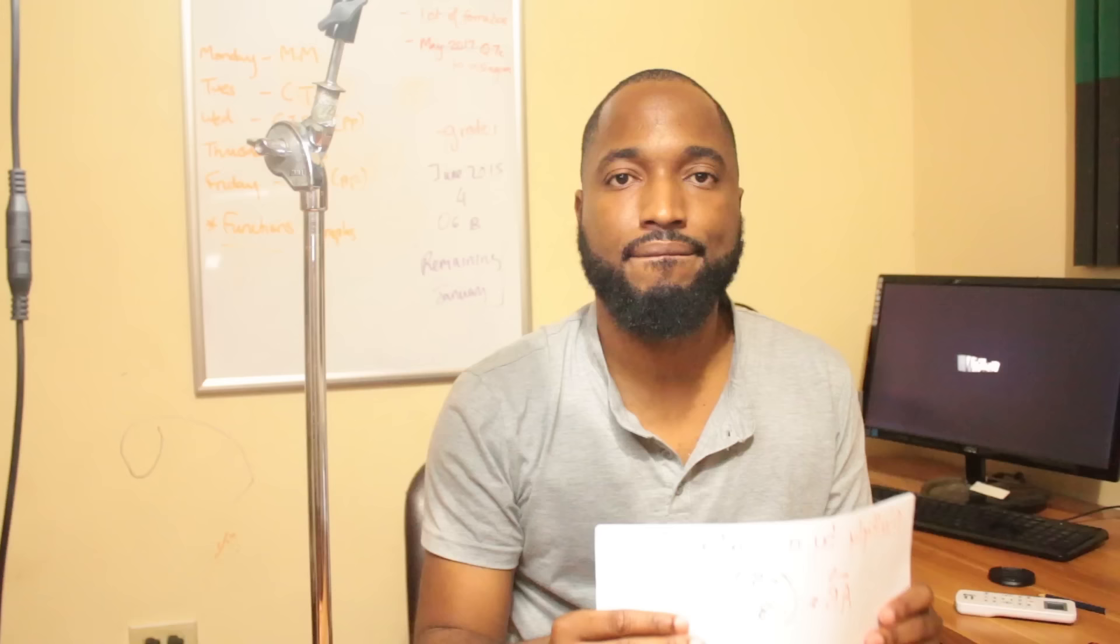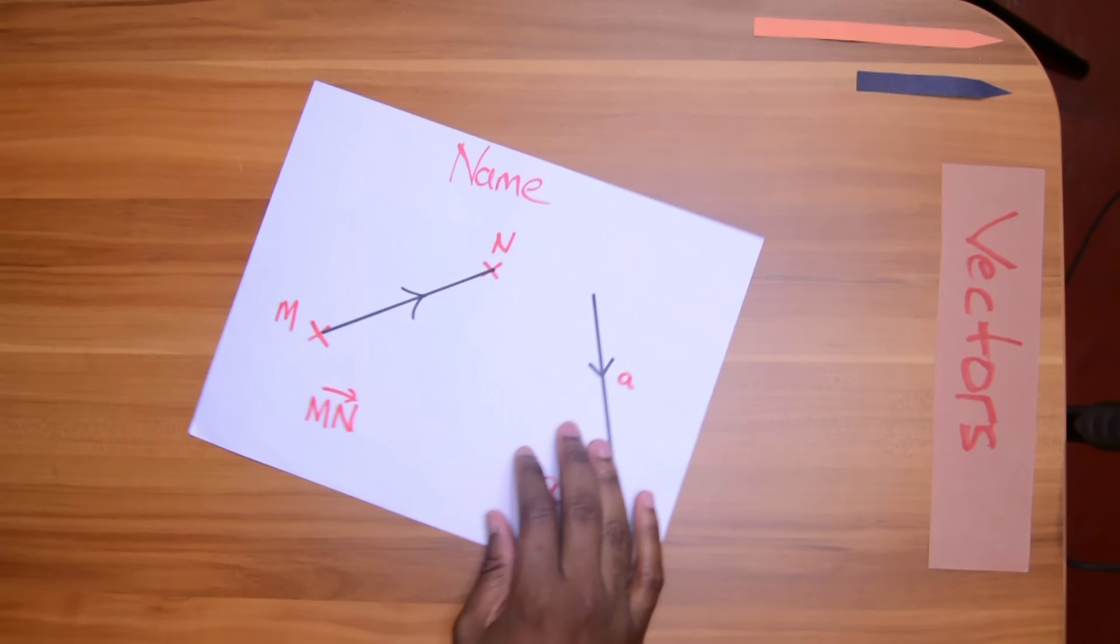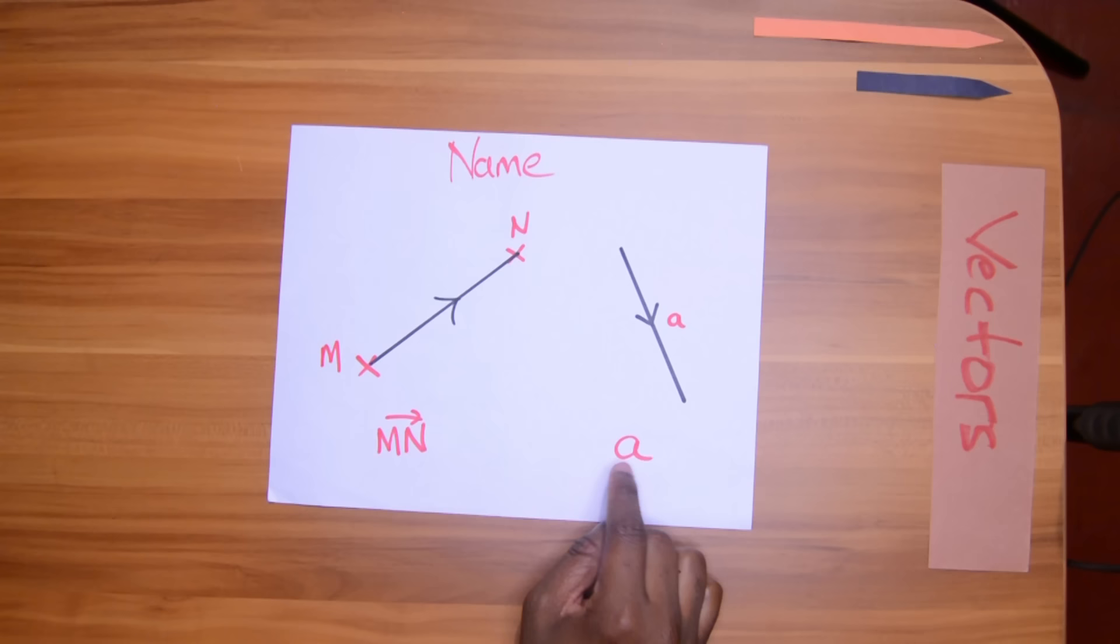So what are some fun things we can do to vectors? Well, we can name them. This vector is named after the two points that it connects, so we'll call it MN. And this vector just has a nice, useful, one simple letter. And the letter must be common, so this vector is called A.